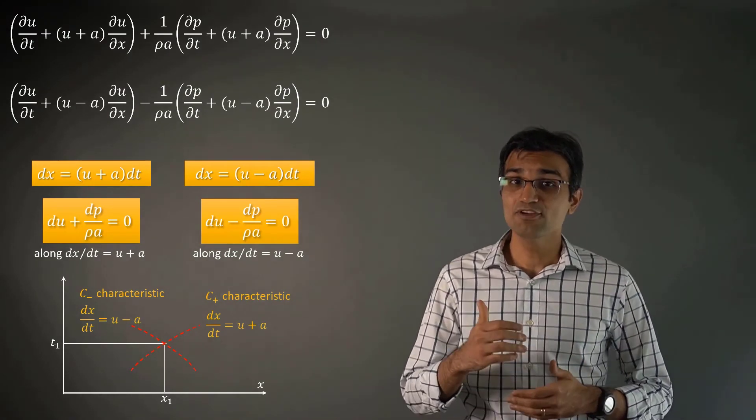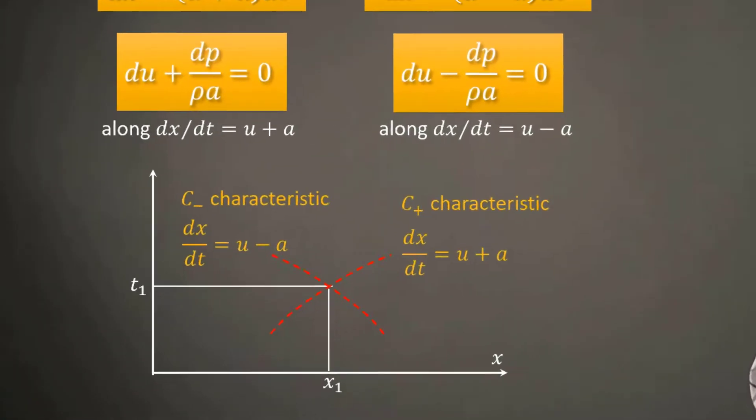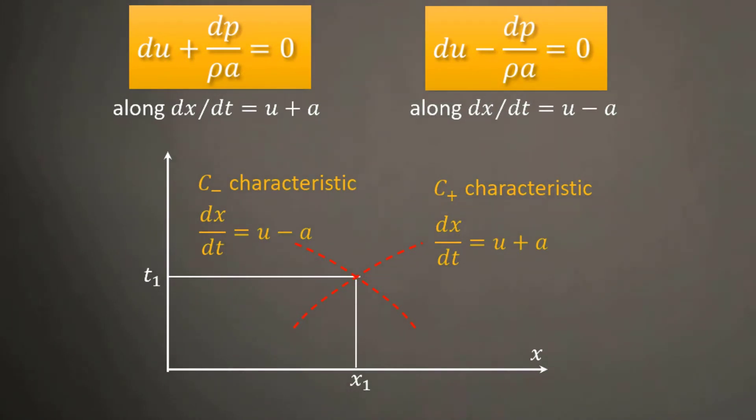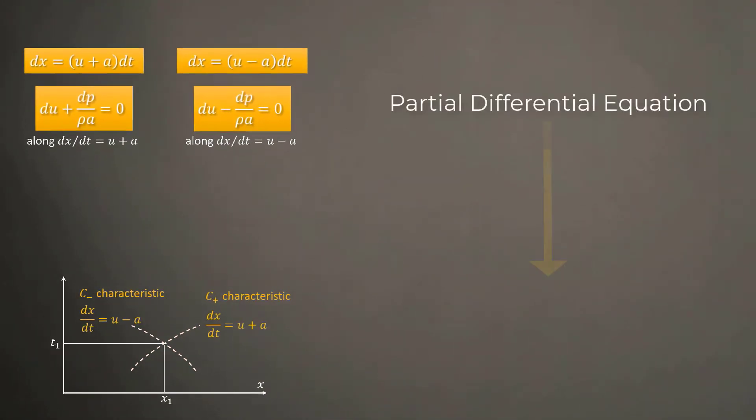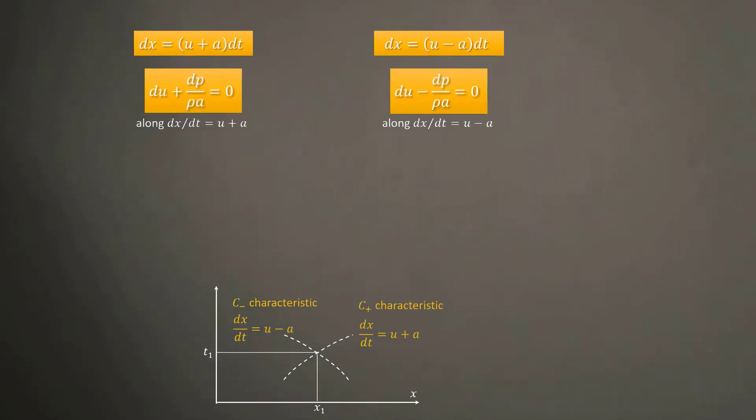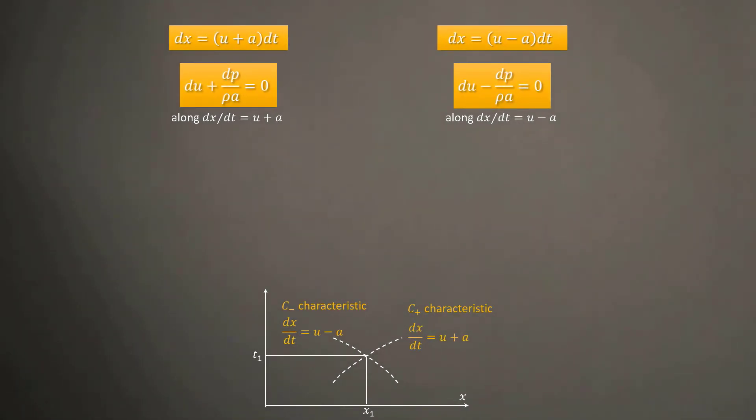Well, if you've noticed, along this line, our governing partial differential equation has reduced to an ordinary differential equation. These lines are called characteristic lines. This is an example of a very powerful technique used in the analysis of compressible flows called the method of characteristics.